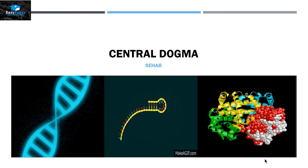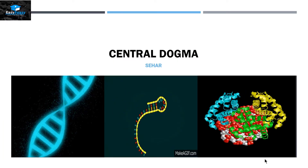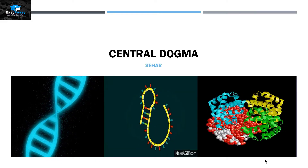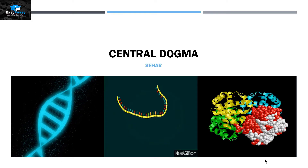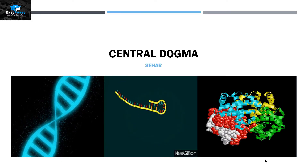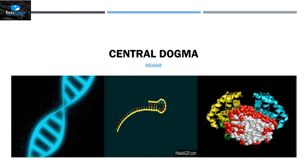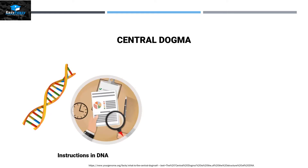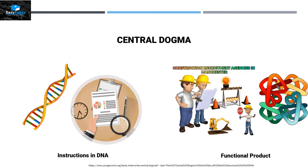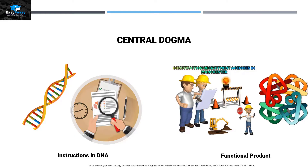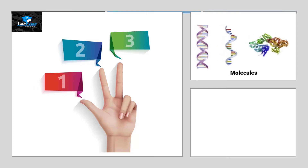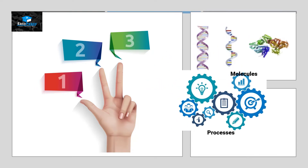Hello friends, this is Seher from Easy Peasy and the topic we are going to discuss today is called Central Dogma. Central Dogma is a process by which the instructions present in DNA can be converted into a functional product. This process involves three different types of molecules and three different types of processes.